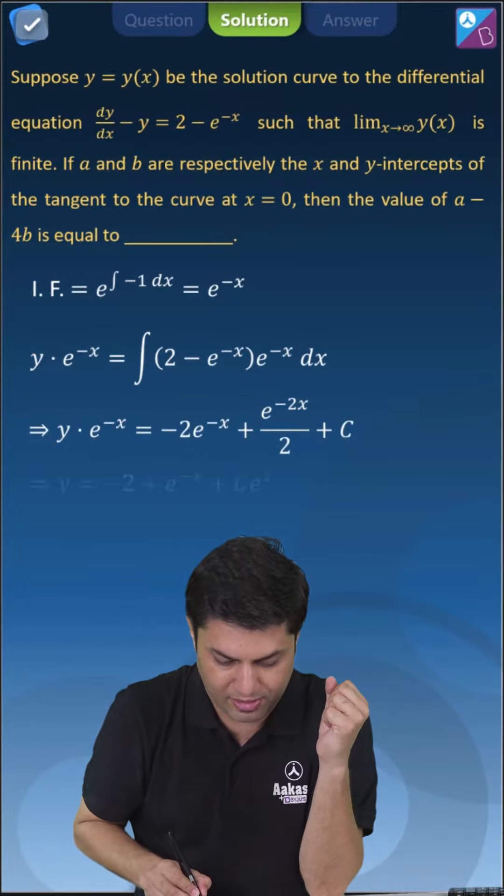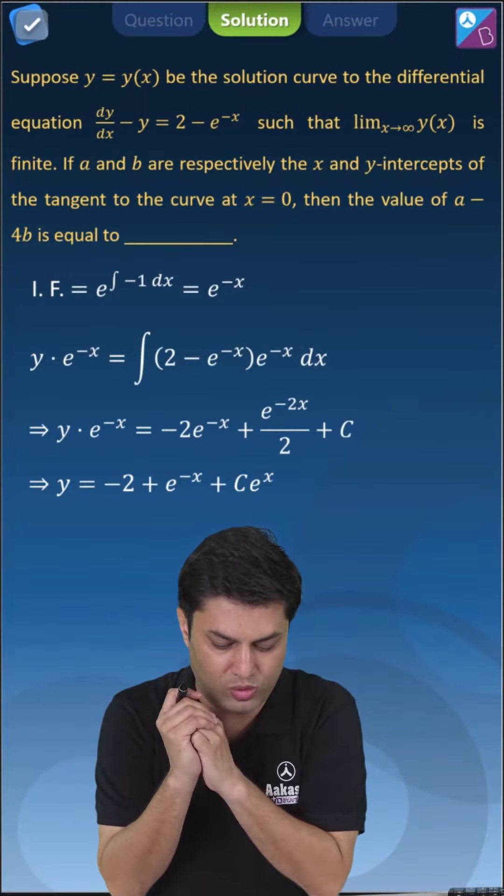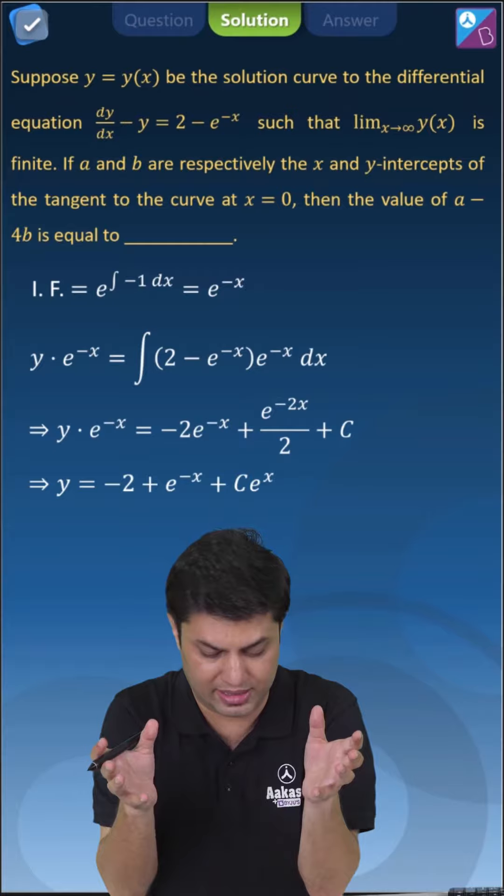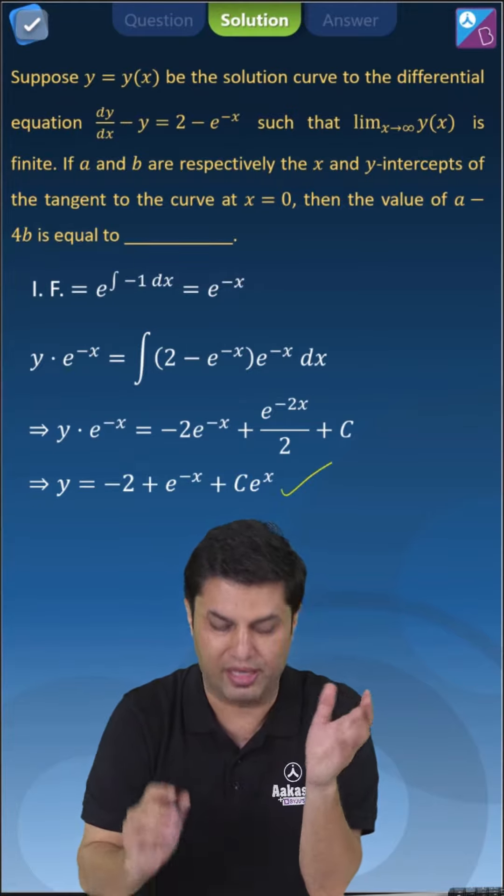When we solve this, you will have a curve: y equals minus 2 plus e to the power minus x plus c times e to the power x.